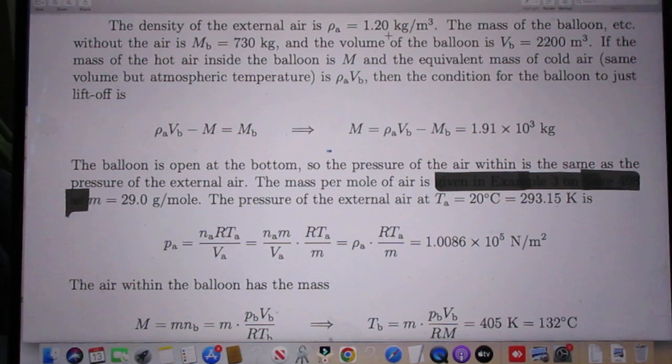We know the density of the air outside the balloon. We know the mass of the balloon and everything else that is attached to the balloon, 730 kilograms. And we know that the volume is 2200 cubic meters.